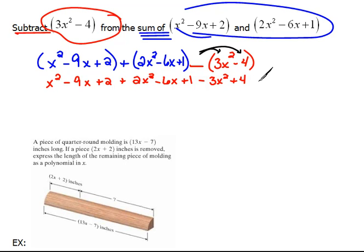Now we can combine our like terms. The first terms that are alike are these x squareds. We have 1 of them plus 2 of them would be 3 of them, minus 3 of them. Those all cancel out. So we do not have any x squareds at all. Next would be our x terms. We have negative 9x and negative 6x. When we combine those, that would be negative 15x. And then we have our constant terms. We have 2 plus 1 would be 3, plus 4 would be 7. That's our final answer.